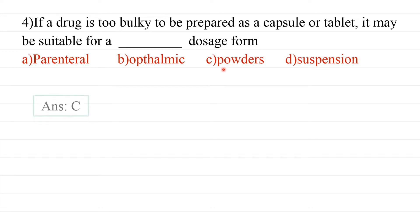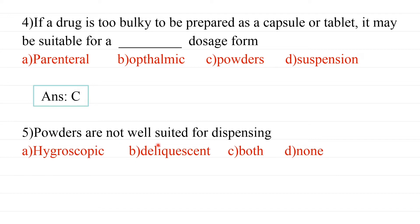Fifth question: Powders are not well suited for dispensing which substances? Option A — hygroscopic substances, Option B — deliquescent substances, Option C — both, Option D — none of the above. Hygroscopic substances absorb water from the atmosphere. Deliquescent substances absorb even greater amounts of water and dissolve in it. Both are disadvantageous for powder dispensing, so they must be double-wrapped or handled specially. The answer is C — both.